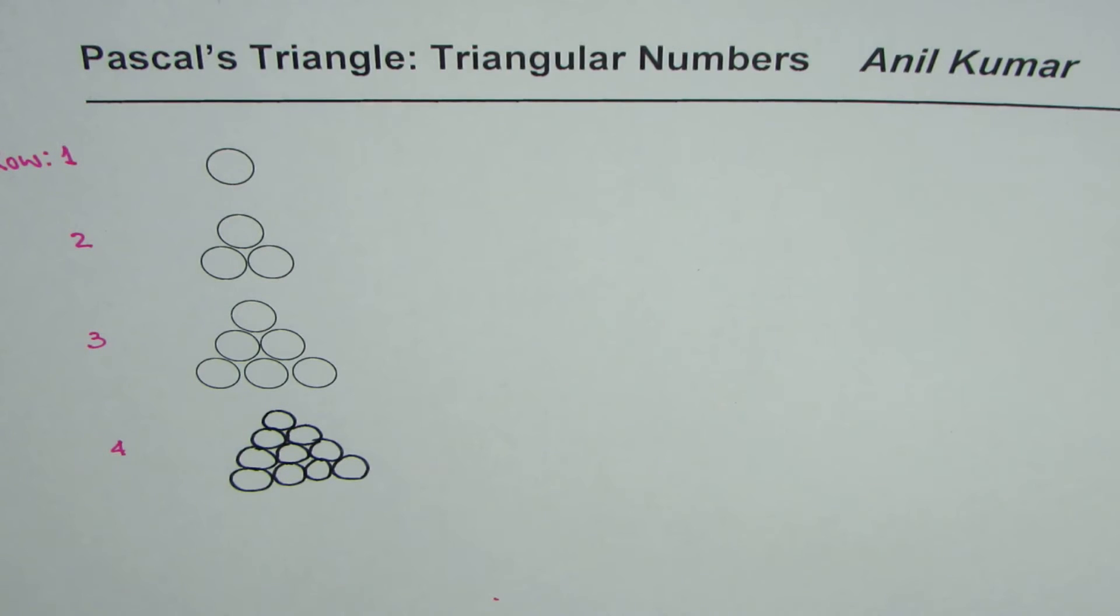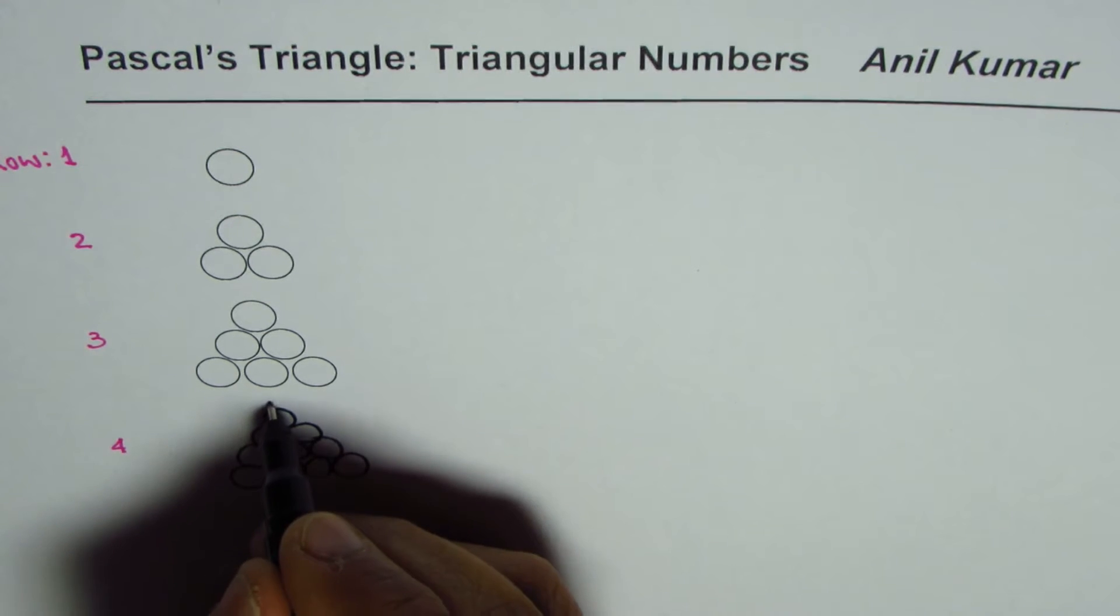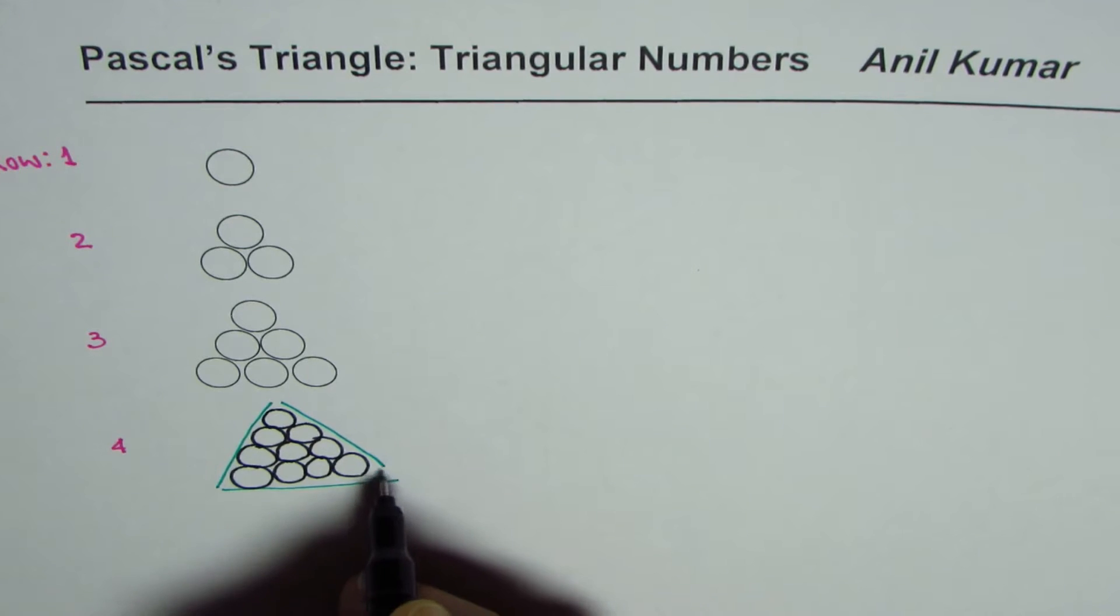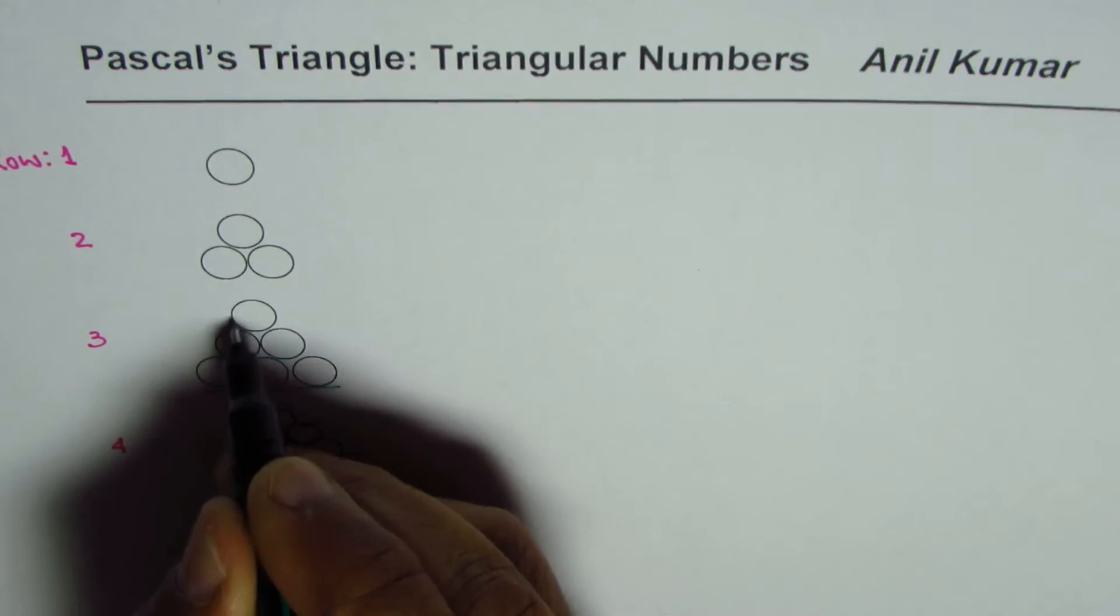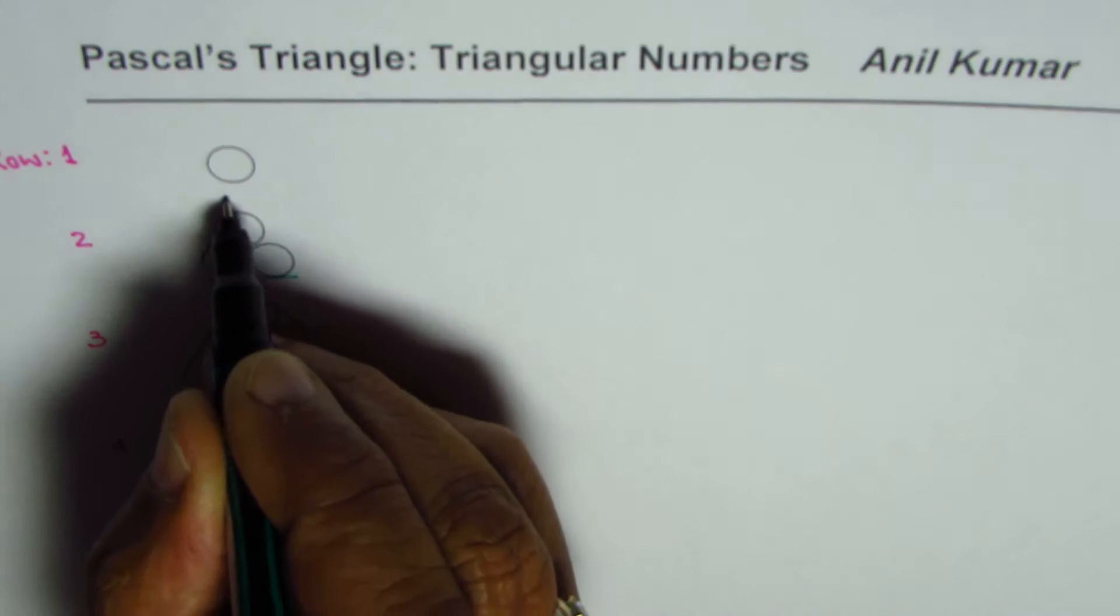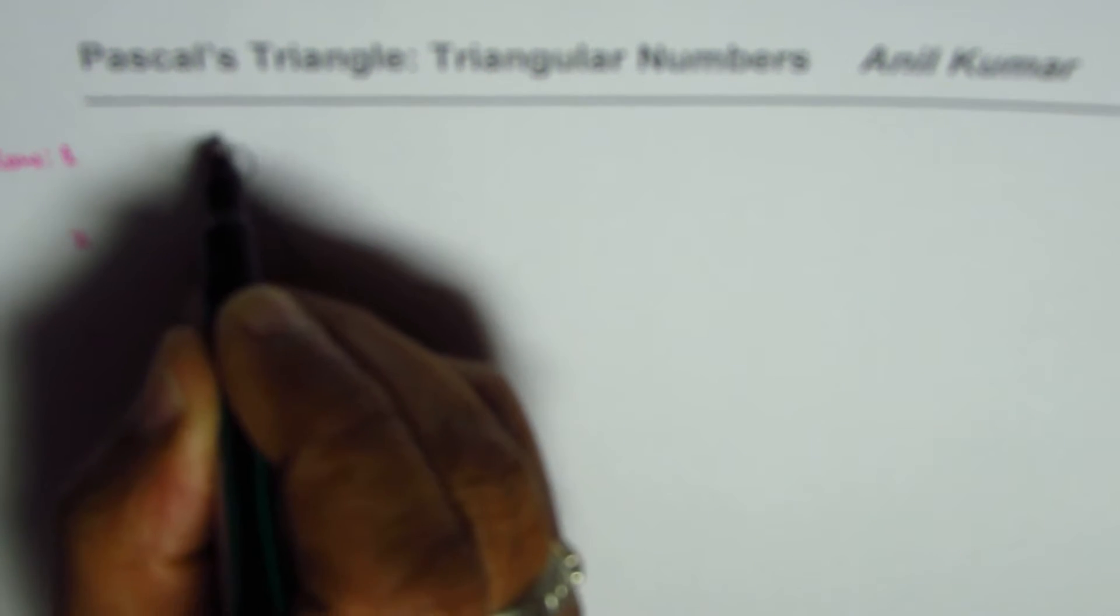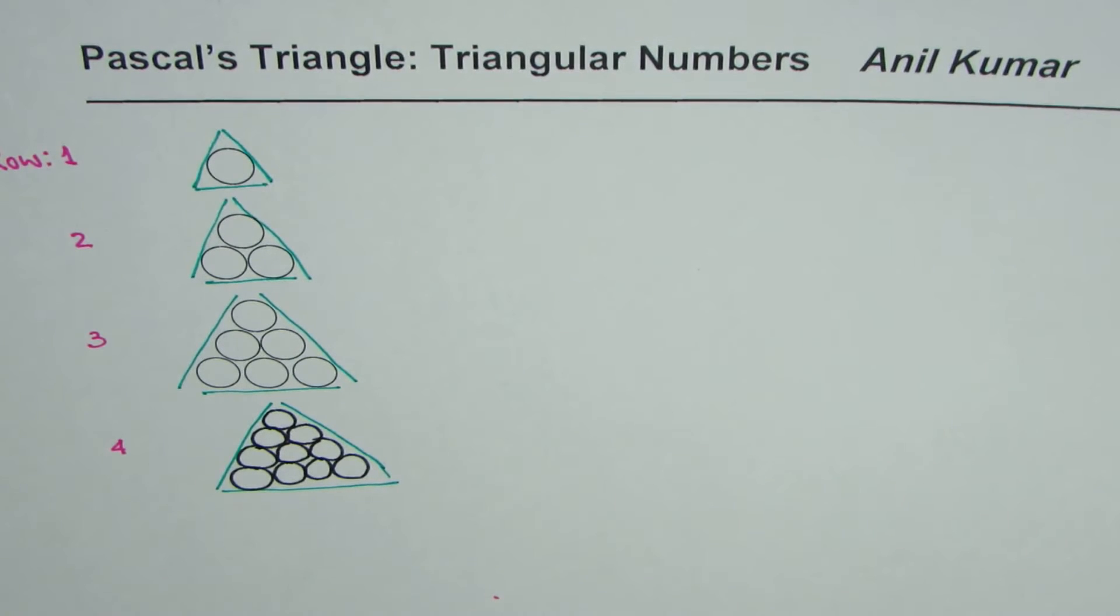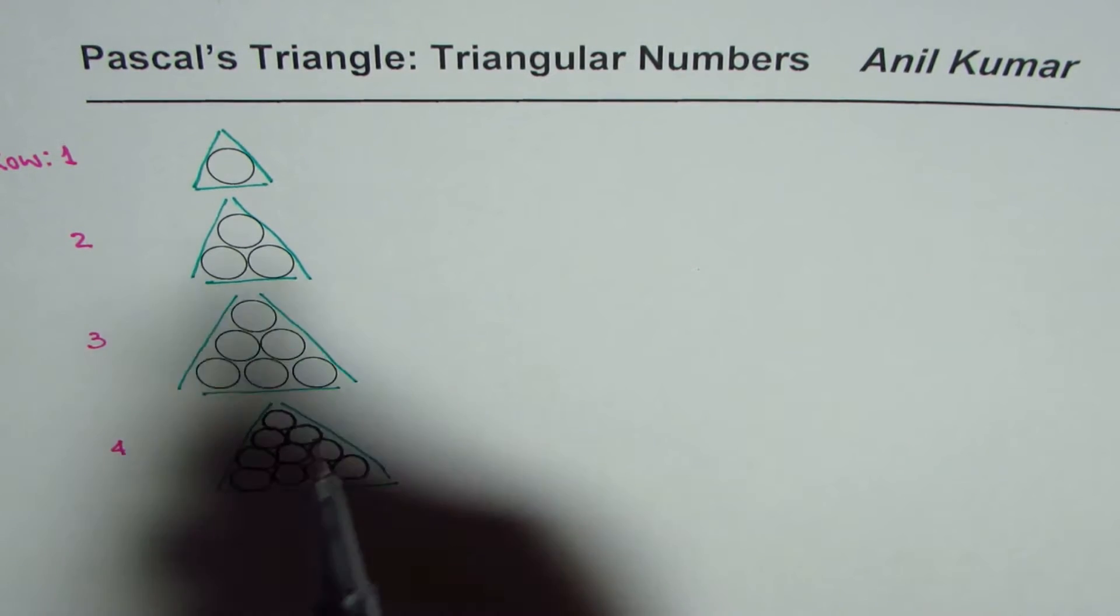And what we notice here is there's kind of an equilateral triangle. Do you see this? Four sides for the fourth circle, three, four, the three rows. So that is the kind of triangle which we are talking about.